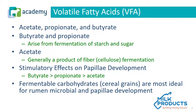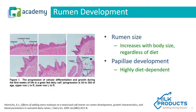Fermentable carbohydrates, such as cereal grains, are most ideal for rumen, microbial, and papillae development. When looking at proper rumen development, rumen size will increase with body size regardless of the diet. However, functional rumen development — or papillae development — is highly dependent on the diet that the calf is fed.